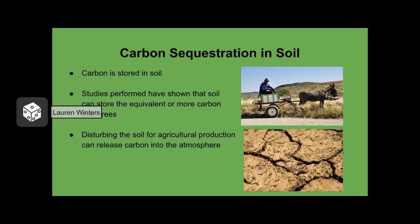Soil is also an important source of carbon storage. Some studies show that as much as 40% of the carbon stored in tropical rainforests lies in the soils. Studies were performed in a rainforest in Africa which showed that the amount of carbon stored in the soil was equivalent to, or in some cases greater than, the amount of carbon stored in the trees. Disturbing these soils for agricultural use can release carbon that normally would have been stored for many years, disrupting the natural process.